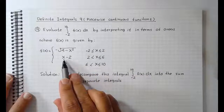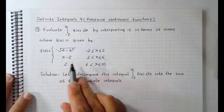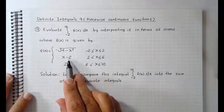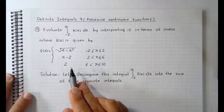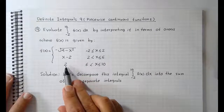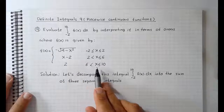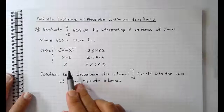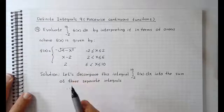f of x is x minus 2 on the interval 2 to 6. This is a straight line with slope 1. And f of x is equal to 2 when x is between 6 and 10. This is a horizontal line y equals 2.